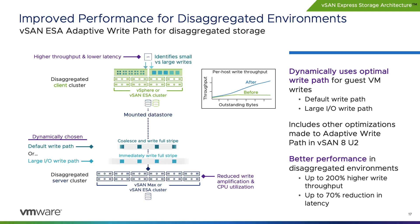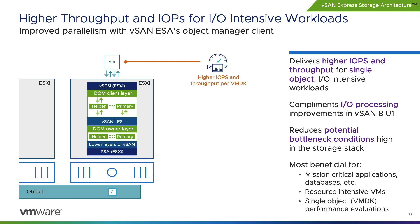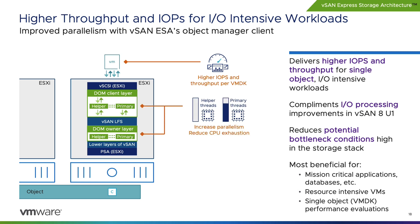Not only will the adaptive write path technology in a disaggregated environment help VMs achieve higher throughput and lower latency, but it will do so automatically in real-time without any administrator interaction needed. The Express Storage Architecture in vSAN 8 Update 2 continues to improve performance for mission-critical VMs. We've optimized I/O processing in the upper layers of the vSAN stack between the VM and its objects, increasing performance by up to 15%. The faster the hardware specifications for your ready-node hosts and networking, the more benefit you'll see with high-demand workloads.